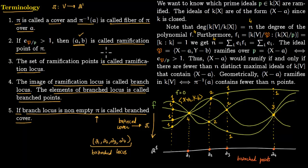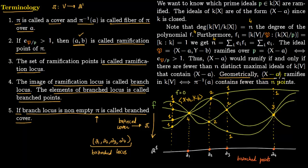You can also see the fibers: the fiber at a₁, the fiber at a₂, the fiber at a₃, and the fiber at a₄. Geometrically, (x−a) ramifies in kV if and only if π⁻¹(a) contains fewer than n points.